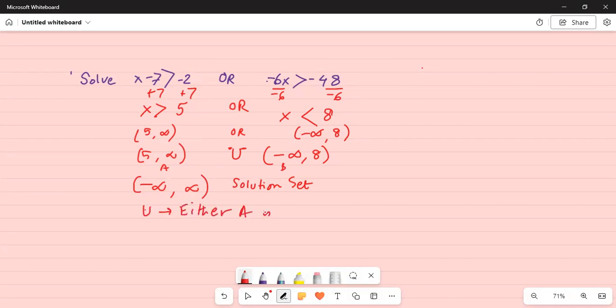either A is true or B is true, or both are true, or both A and B are true.